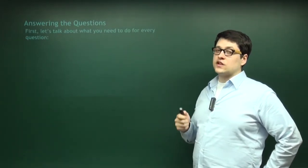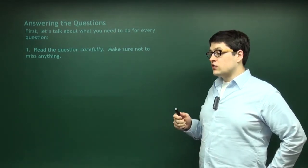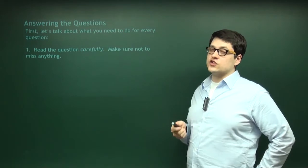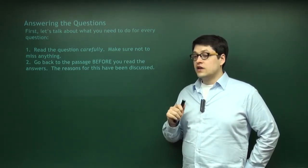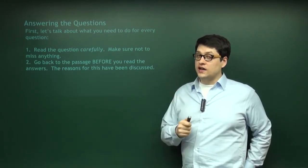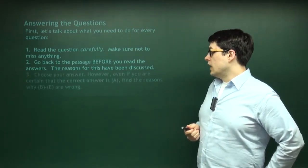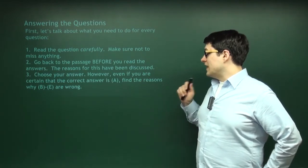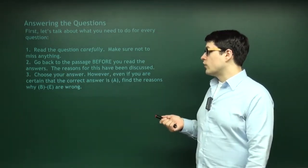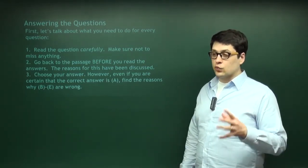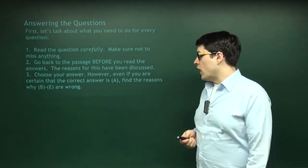This is the process you need to follow for every single question, every single time. First, read the question carefully — make sure you're not missing any word, and that you comprehend what the question is asking. Step two: go back to the passage before you read the answers. Do not read the answer choices before you've come up with your own answer — it is the number one thing you can do to increase your score. Step three: then choose your answer, and even if you're sure A is right, do a quick run-through of why B, C, D, and E are wrong.